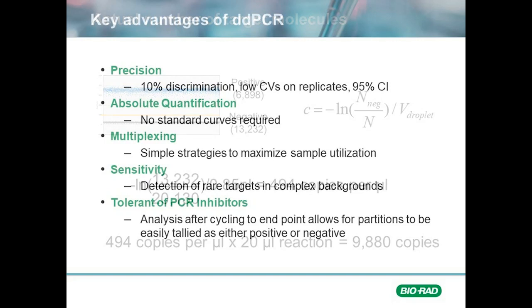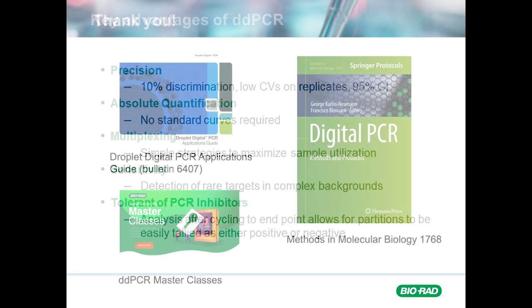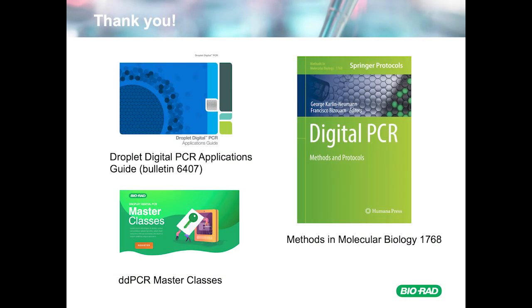As you have hopefully seen, molecular counting with ddPCR is relatively straightforward and conveys many advantages over qPCR and other nucleic acid quantification techniques. Precision and accuracy, absolute quantification without standards, higher order multiplexing, high sensitivity and complex backgrounds, and robustness all make ddPCR an ideal technology for nucleic acid analysis. Thank you for taking the time to view this presentation.